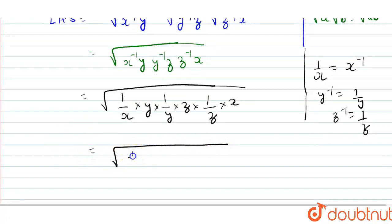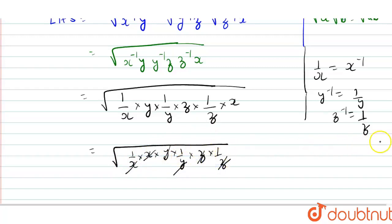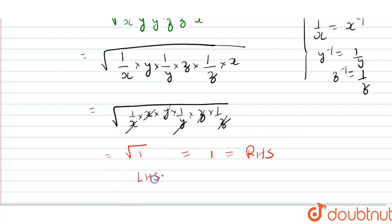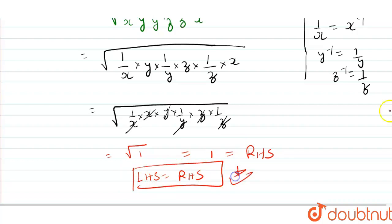This gives us under root of (1 upon x) into x, into y into (1 upon y), into z into (1 upon z). This x and this x cancel, this y and this y cancel, and this z and this z cancel. So finally our answer is under root of 1, and the square root of 1 is nothing else but 1, which equals our RHS. Hence we have proved that LHS equals RHS.